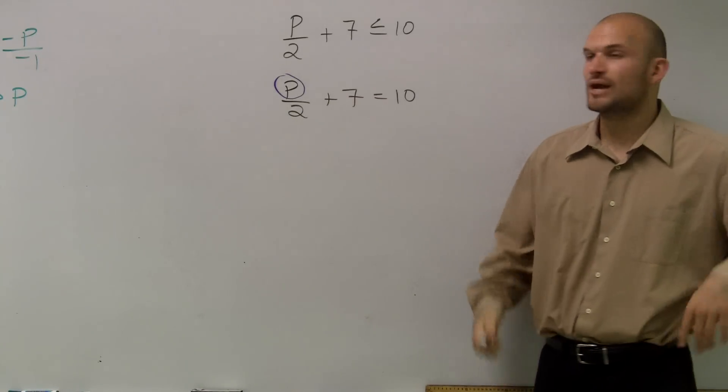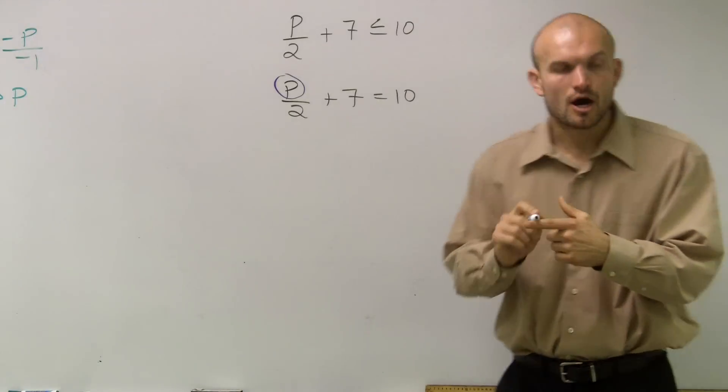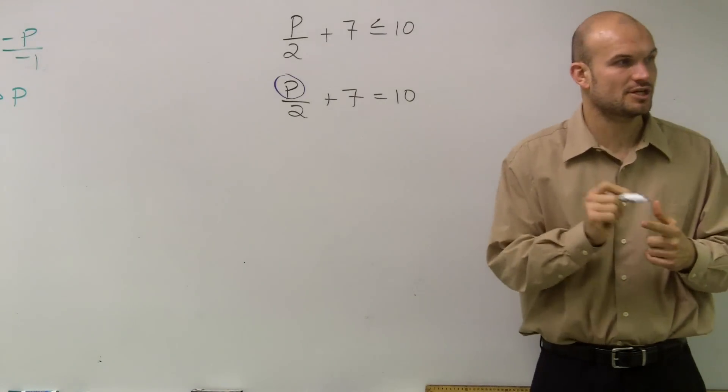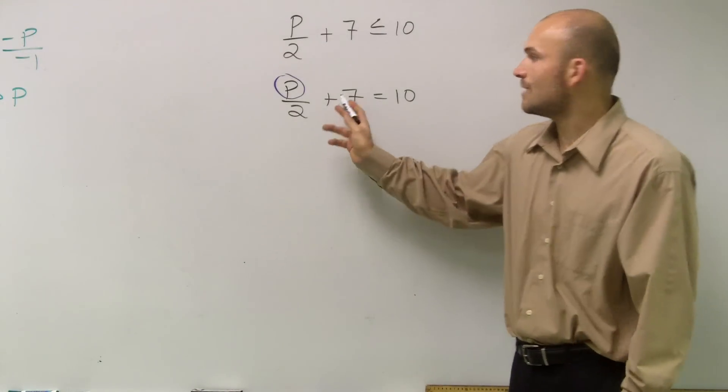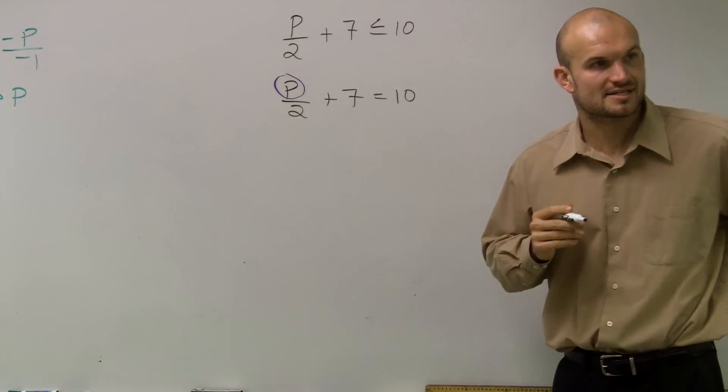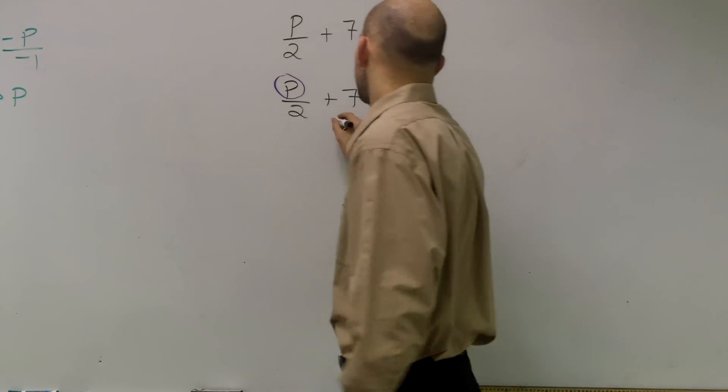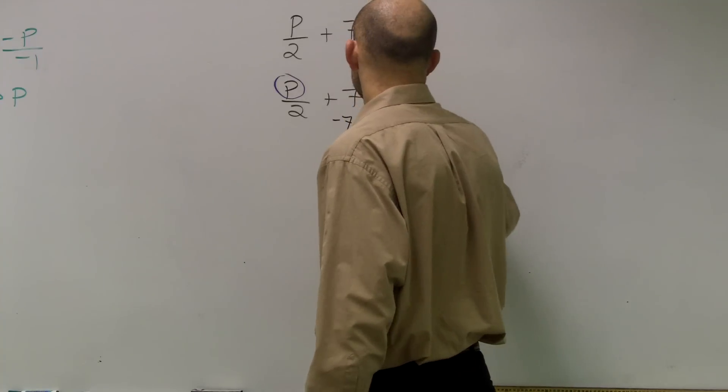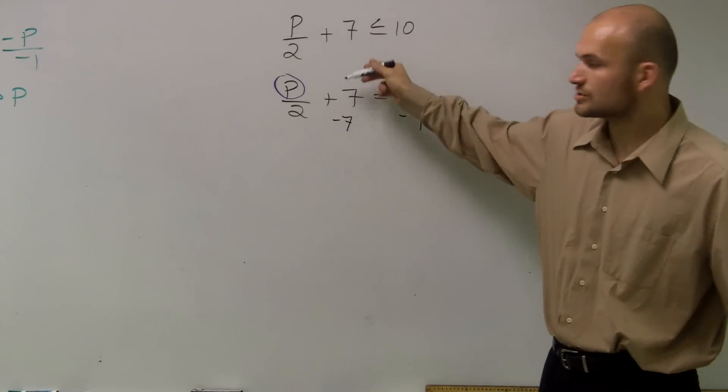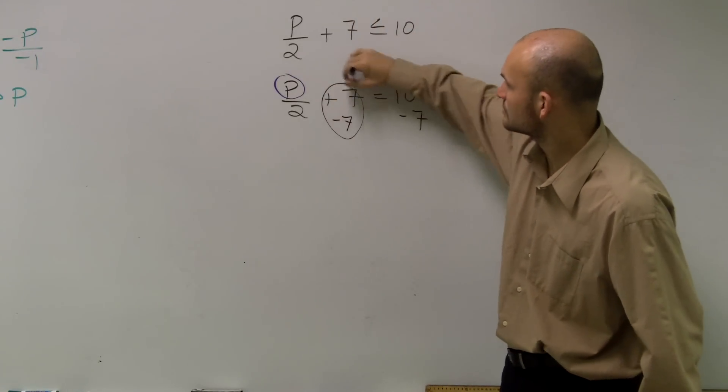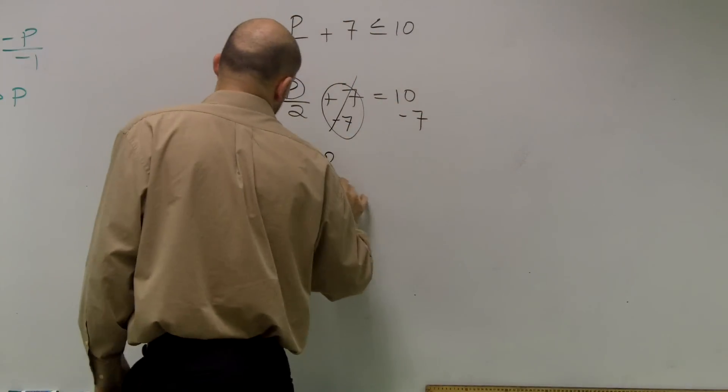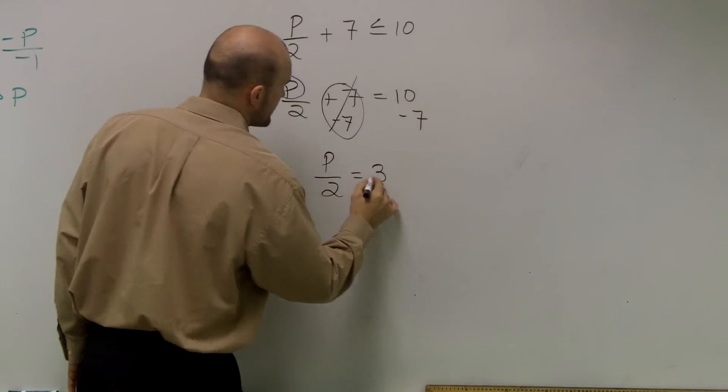So we always—here's the first step—always undo addition and subtraction first. So I need to undo addition of a positive 7. So to undo that, I'm going to subtract 7 on both sides of the equation sign. So 7 minus 7 is 0. So now I'm left with p over 2 equals 3.